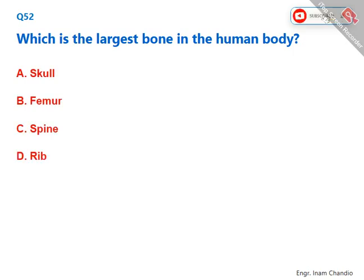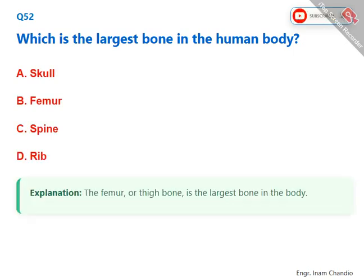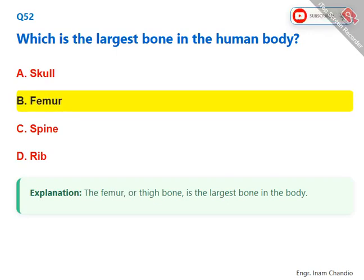Which is the largest bone in the human body? The femur, or thigh bone, is the largest bone in the body. The correct answer is B. Femur.